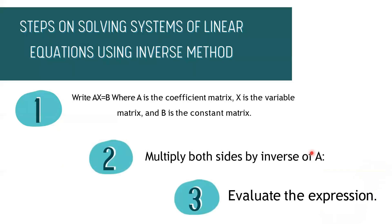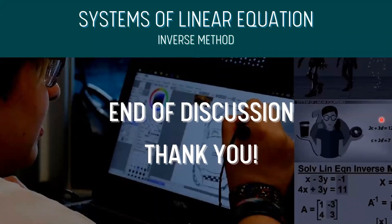To summarize, here are the steps on solving systems of linear equations using the inverse method: Step 1 is to write AX equals B, where A is the coefficient matrix, X is the variable matrix, and B is the constant matrix. Step 2 is to multiply both sides by the inverse of A. Step 3 is to evaluate the expression. That's the end of our discussion — thank you for listening.